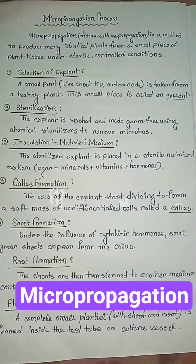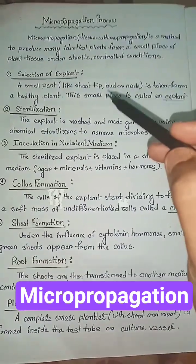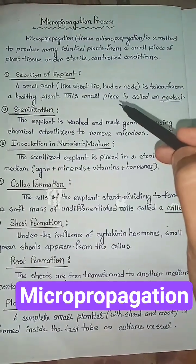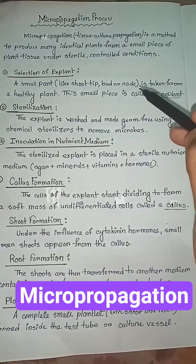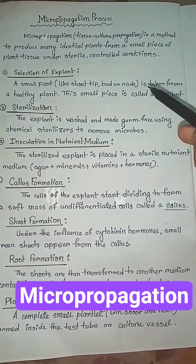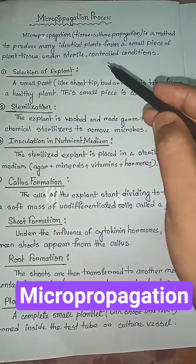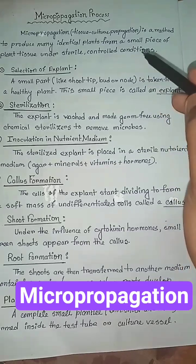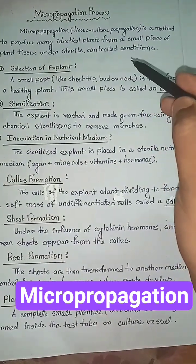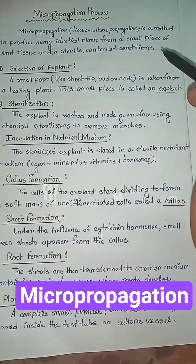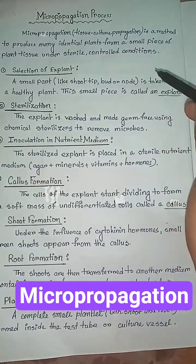Hello everyone, welcome back to my channel, Learn Biology in Easy Way. In this video, I am going to discuss about the micropropagation process. Micropropagation, or tissue culture propagation, is a method to produce many identical plants from a small piece of plant tissue under sterile controlled conditions.